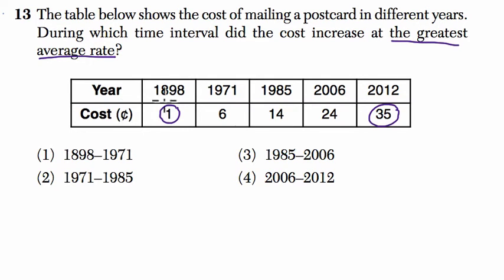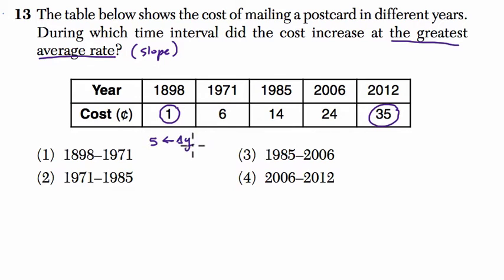They want to know which time interval saw the cost increase at the greatest average rate — and that's a way of saying which interval has the greatest slope. So we can calculate them in detail, but let's just set them up and compare; there might be a shortcut. From 1898 to 1971, we're going up five cents — that's our delta y, our rise. Over how many years? That's 73 years. So that's our slope for that interval.